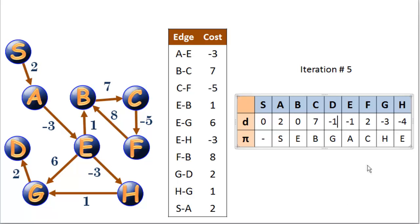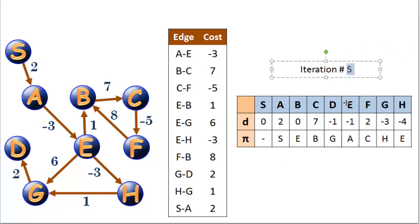Our original route was S, A, E, G, D. Now we're taking S, A, E, H, G, D. The predecessor value stays the same — it's already G; we just updated the new cost to get to G. H to G: our cost to H is negative 4, add 1, we're at negative 3 for G — already factored in. And S to A of 2 — also already factored in.